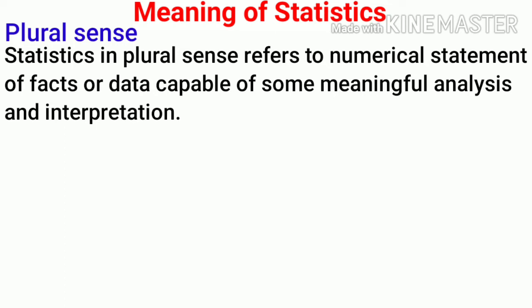If we say the height of Shyam is 5 feet 2 inches and the height of Ram is 5 feet 6 inches, then it becomes numerical data, or numerical statement, or quantitative information. Why? Because numbers are used and they give meaningful information.